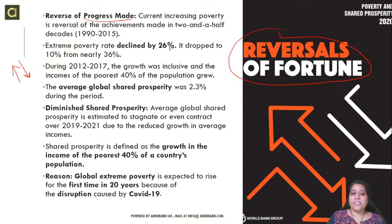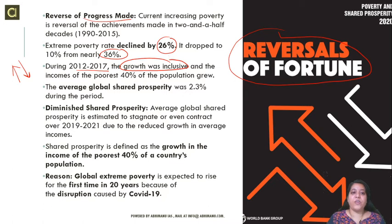The poverty rate had declined by 26%, down from 36% previously. From 2012 to 2017, we saw inclusive growth, with the poorest 40% of the population experiencing income growth. The average global shared prosperity rate was around 3.2–3.3% during this period.